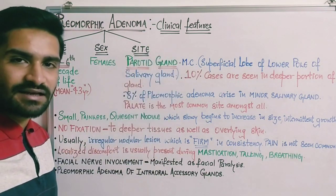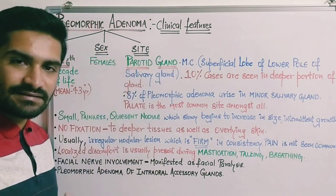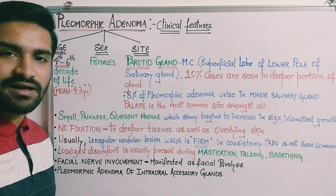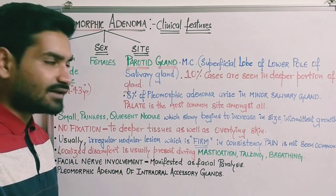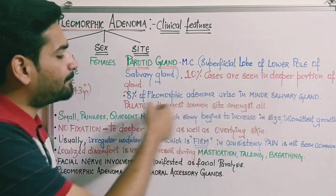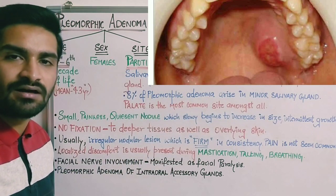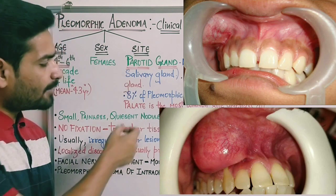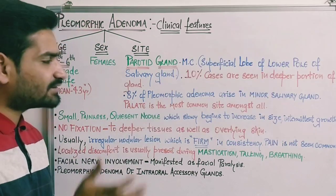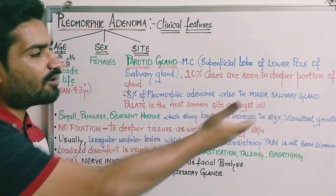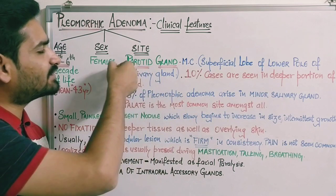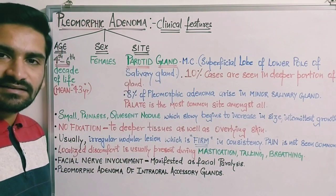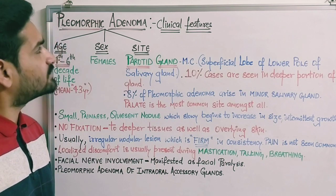Eight percent of pleomorphic adenoma cases arise in minor salivary glands. For minor salivary glands, the palate is the most common site, although other sites include the buccal mucosa and lip. In major salivary glands, the parotid gland is considered the most common site for pleomorphic adenoma.